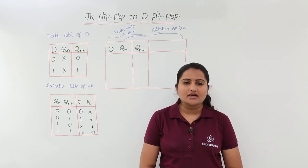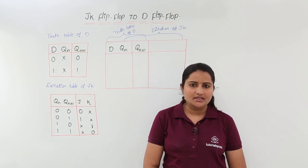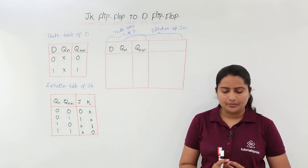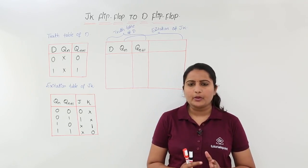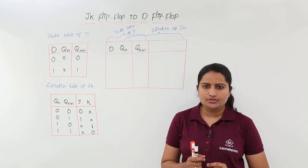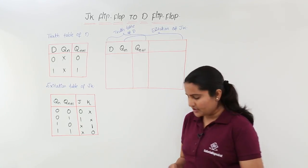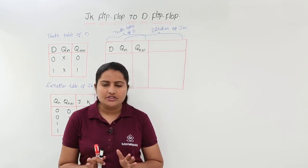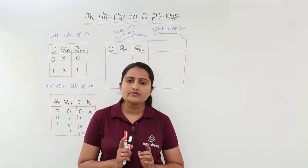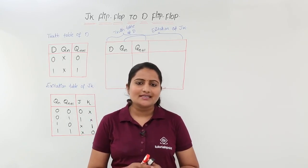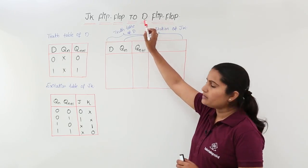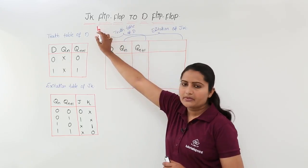In this class we are going to discuss the conversion of JK flip-flop to D flip-flop. For any flip-flop conversion you need the truth table of the destination flip-flop and the excitation table of the source flip-flop. Here the destination flip-flop is D and the source flip-flop is JK.